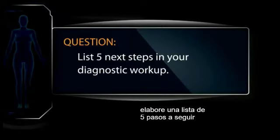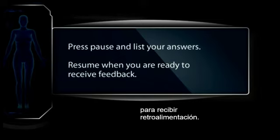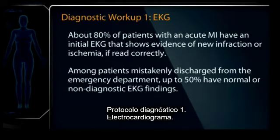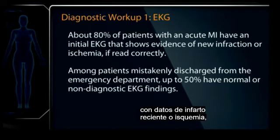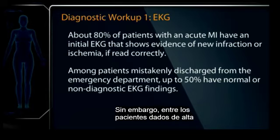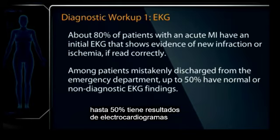List five next steps in your diagnostic workup. Press pause and list your answers. Resume when you are ready to receive feedback. EKG — about 80% of patients with an acute MI have an initial EKG that shows evidence of new infarction or ischemia if read correctly. However, among patients mistakenly discharged from the emergency department, up to 50% have normal or non-diagnostic EKG findings.